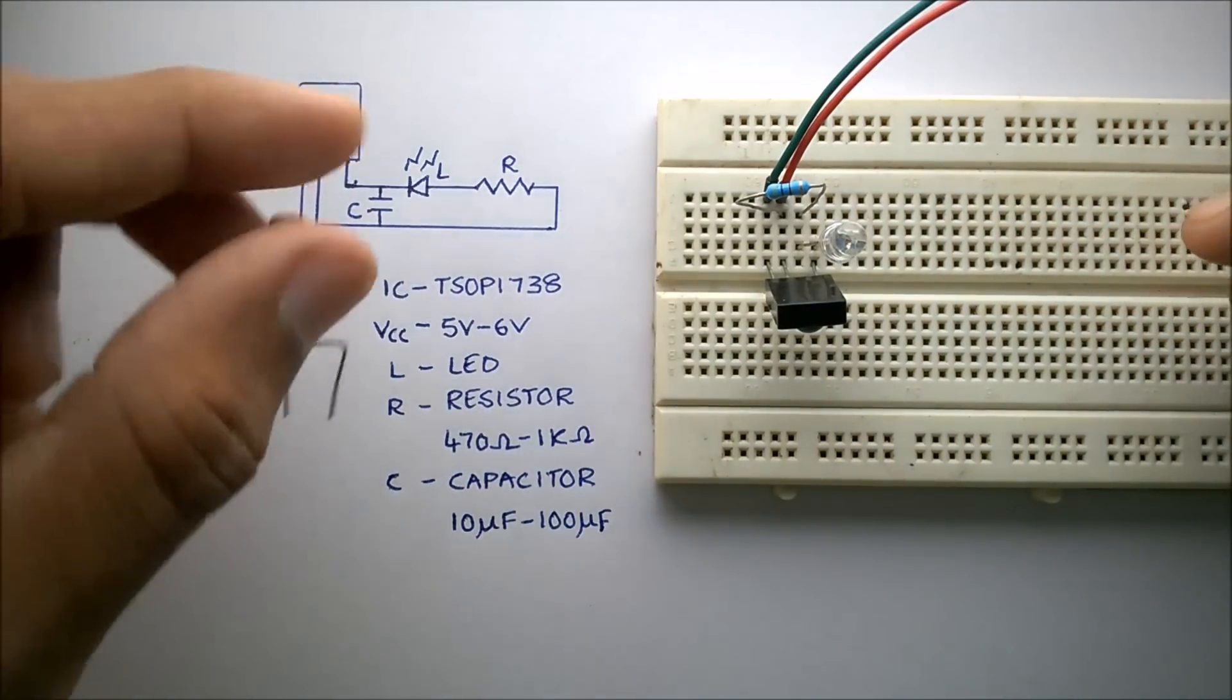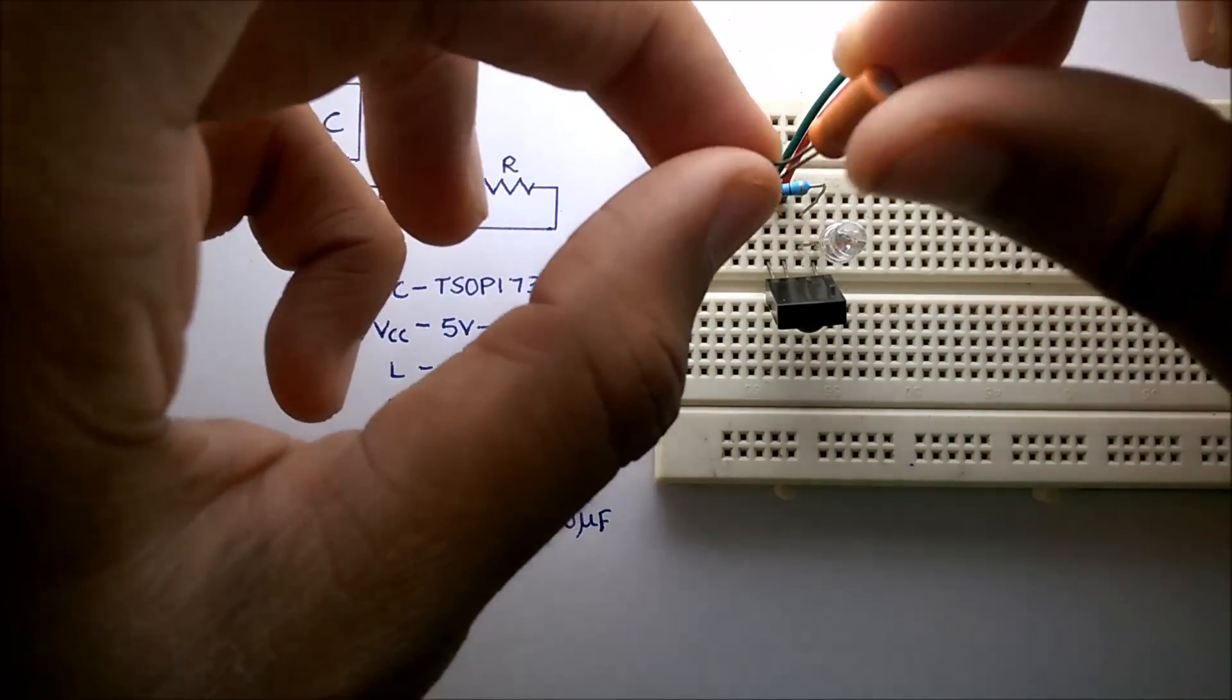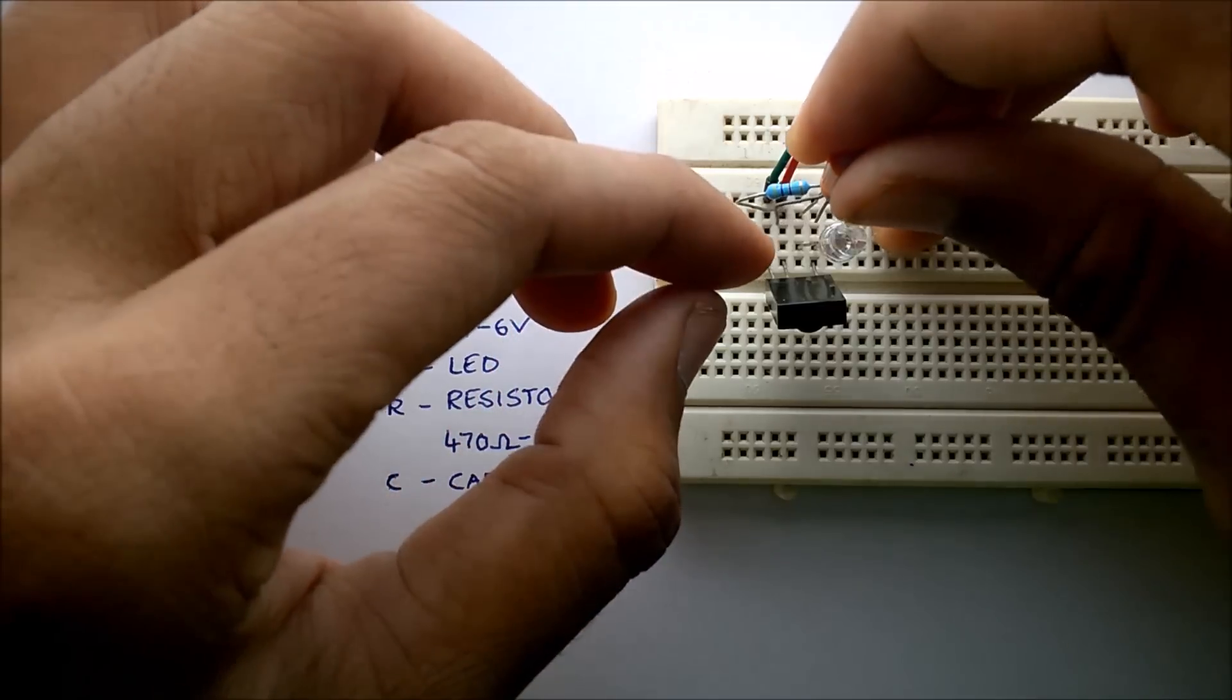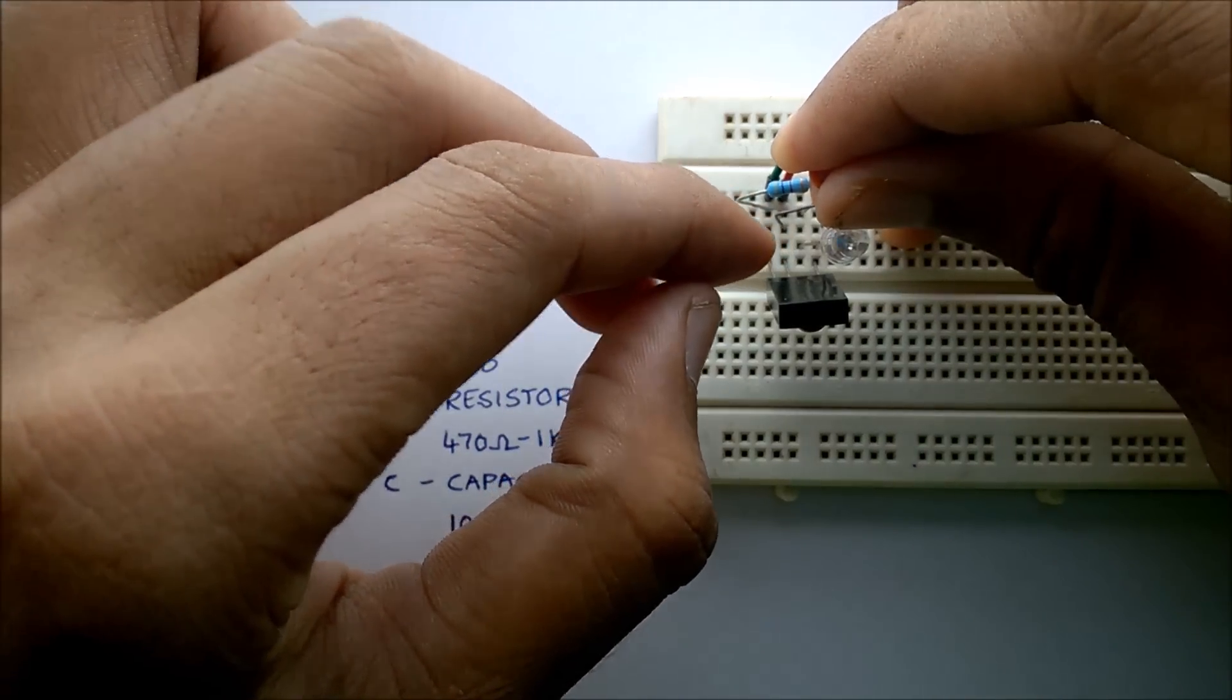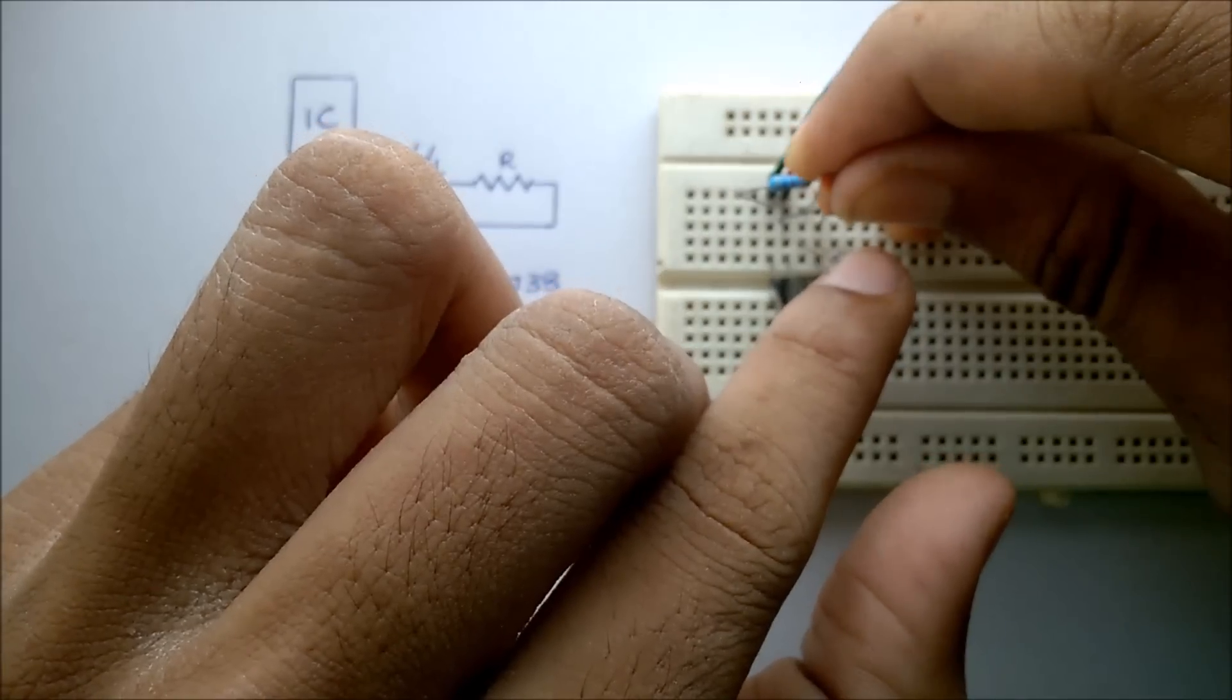Now I will be connecting the capacitor between the plus 5 volts and the output of the TSOP 1738.